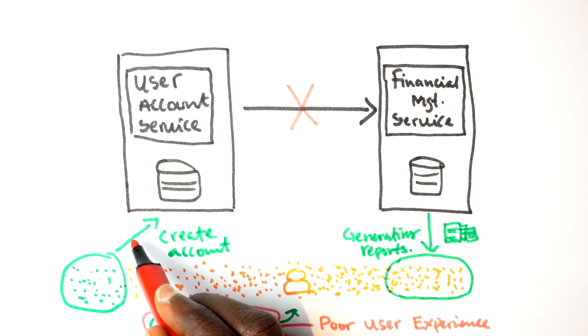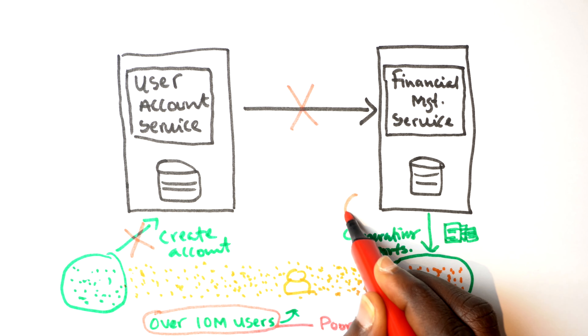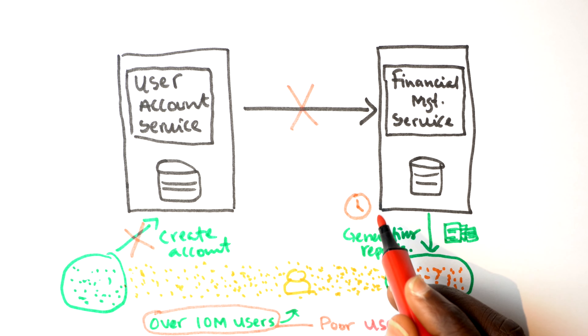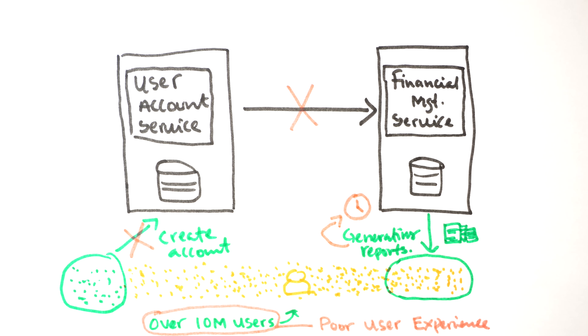Because the financial management service is tightly coupled with the user account service, users are unable to create new accounts. Whenever a user tries to create an account, the account service does create it but then tries to communicate directly with the financial management service. Because the financial management service instances are bogged down by report generation, that communication times out and the user just gets an error message.